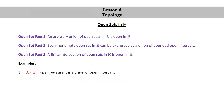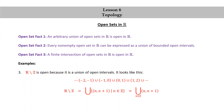R minus Z is open because it is a union of open intervals. It looks like this: … ∪ (−2, −1) ∪ (−1, 0) ∪ (0, 1) ∪ (1, 2) ∪ … and so on. We can write R minus Z as the union of intervals (n, n+1) such that n is in Z, or as ∪_{n ∈ Z} (n, n+1).